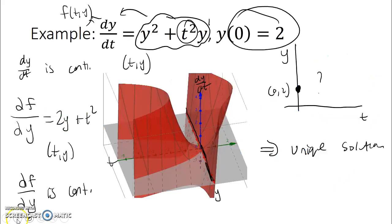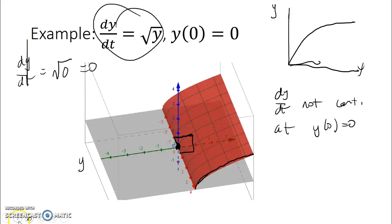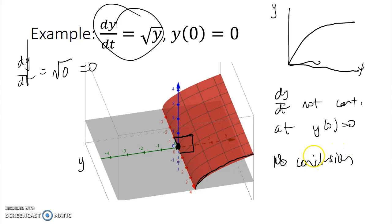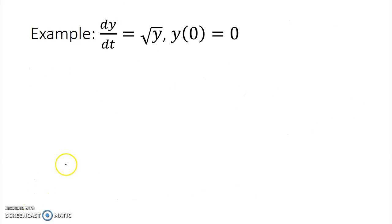So dy/dt is not continuous at y(0) equals 0. Therefore, the theorem is inconclusive and no conclusion can be drawn. We can always try to find a solution using analytic techniques, but for now we know the theorem offers no insight.